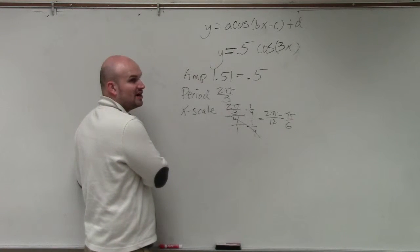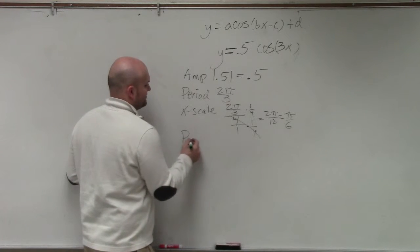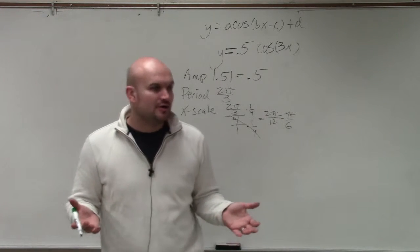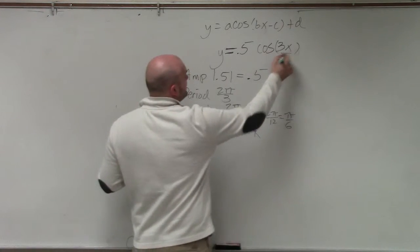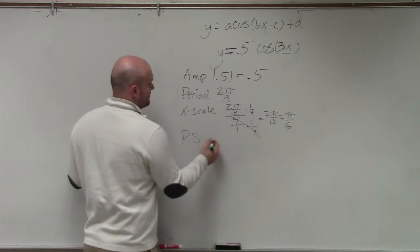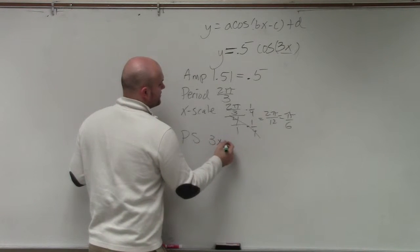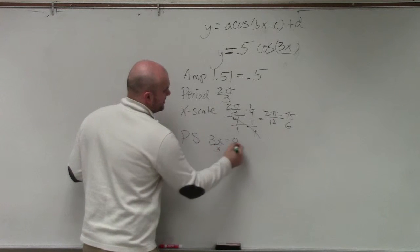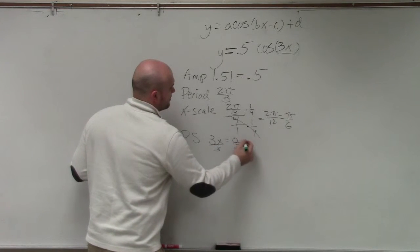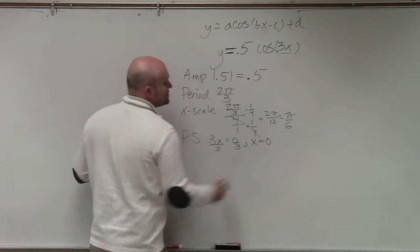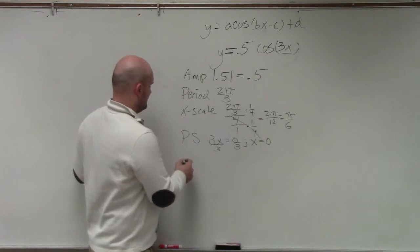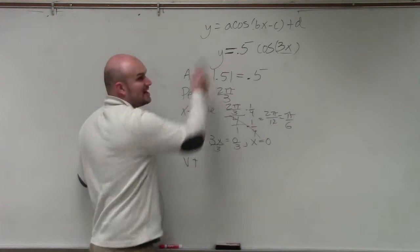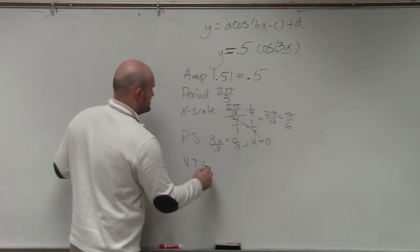So the next thing is to find the start and the end, or what we call the phase shift. I call that the initial period start in your notes. All you do for that is do bx minus c equals 0. But in this case, I just do 3x equals 0. Well, divide by 3, x equals 0. So therefore, my initial period is going to start at 0. And is there any vertical translation? Am I adding or subtracting anything outside my function? No. So I would just say none.